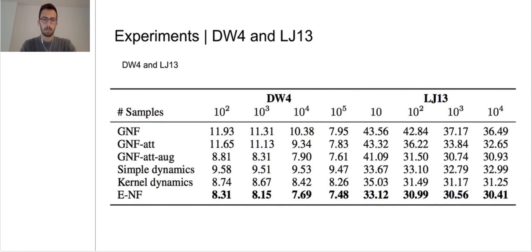In the first experiment, we report the estimated test negative log likelihoods in relatively simple datasets sampled from energy functions where E(n) symmetries are present. Those datasets are DW4 and LJ13. We see that our method outperforms its non-equivariant variants and also previous equivariant methods for this positional dataset.